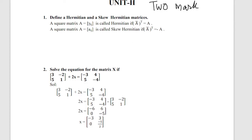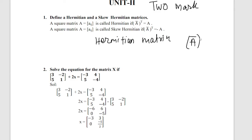We will define the Hermitian and skew-Hermitian matrix. A Hermitian matrix is a square matrix where A-bar transpose equals A. A-bar is the conjugate matrix, and A-bar transpose equal to A is called a Hermitian matrix.